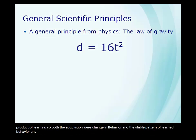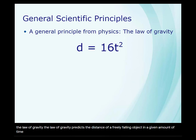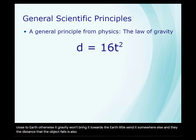There are many general scientific principles. One of the most well-known is a general principle from physics: the law of gravity. The law of gravity predicts the distance of a freely falling object in a given amount of time. There are some caveats to this law: the object has to be stationary to begin with, it has to be relatively close to Earth, and the distance the object falls is also impacted by other forces, for example, air resistance.